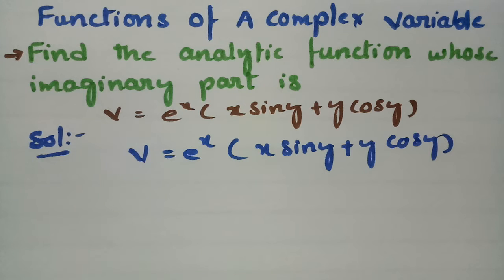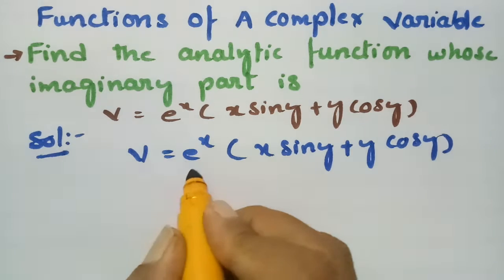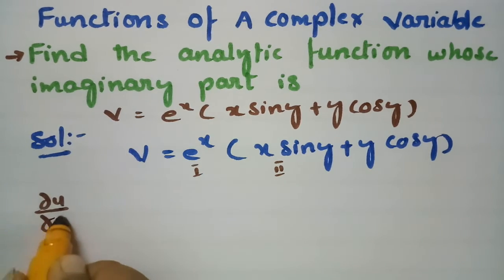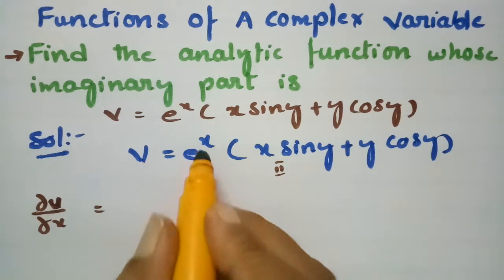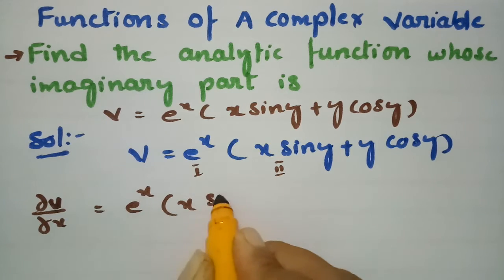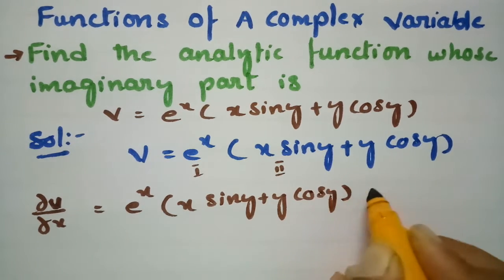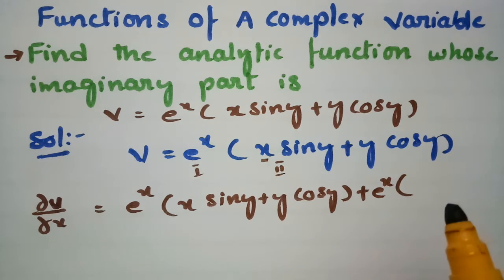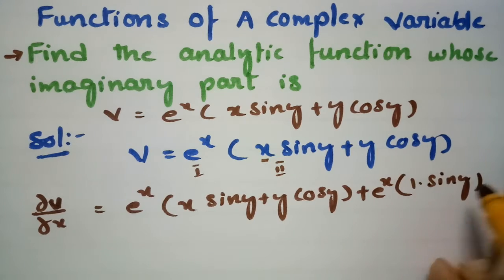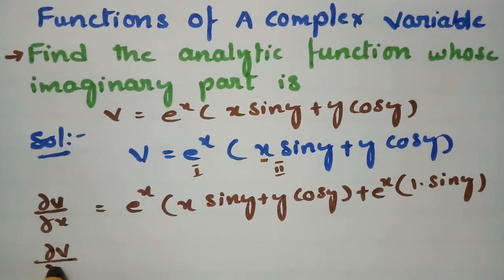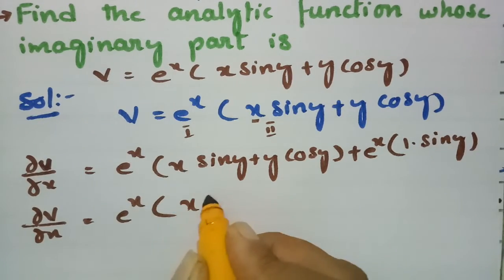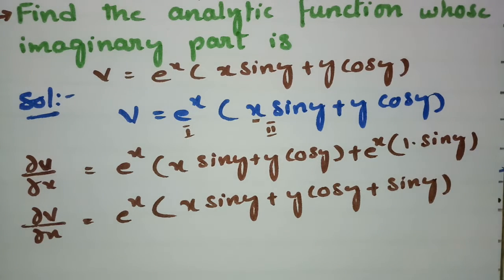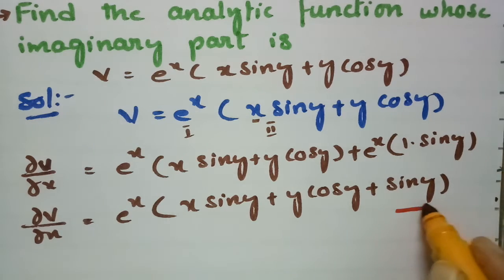I need to make a derivative with respect to x using the UV rule (product rule). So ∂v/∂x = eˣ(x·sin(y) + y·cos(y)) + eˣ·sin(y). Taking eˣ common, ∂v/∂x = eˣ(x·sin(y) + y·cos(y) + sin(y)). This is Equation A.